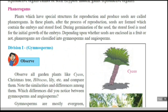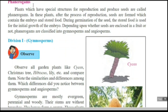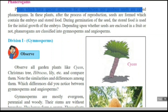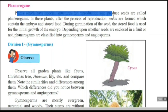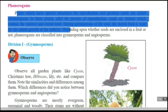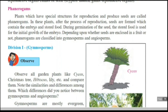Today we are going to start the second sub-kingdom, that is the phanerogames. Plants which have a special structure for reproduction and produce seeds are called phanerogames. In these plants, after the process of reproduction, seeds are formed which contain the embryo and stored food. When fertilization occurs and a zygote is formed, that zygote develops into the embryo, and with the embryo, stored food is also present. During germination of the seed, the stored food is used for the initial growth of the embryo.